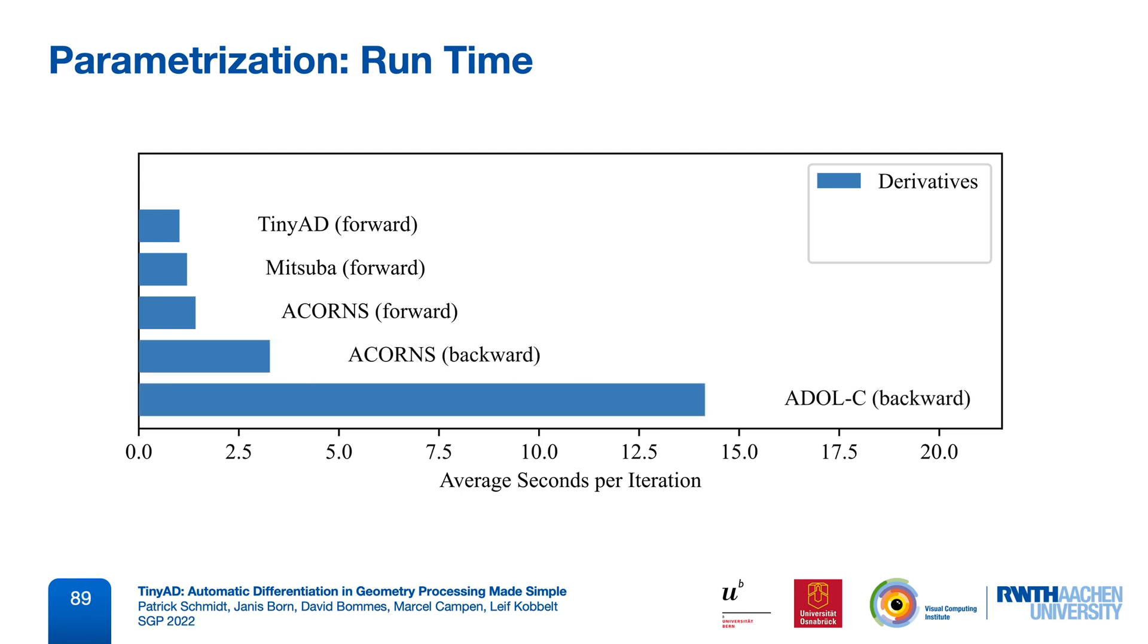Both backward-mode implementations that we tried were slower. In particular, Adolc, which benefits less from compiler optimization. These timings here are single-threaded. If we in addition parallelize the per-element computations, which is also very easy to do, we even save a bit more time.